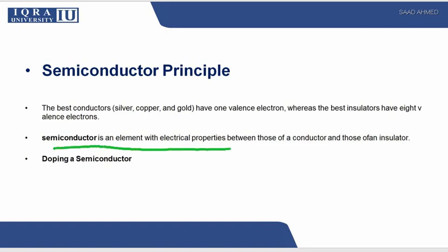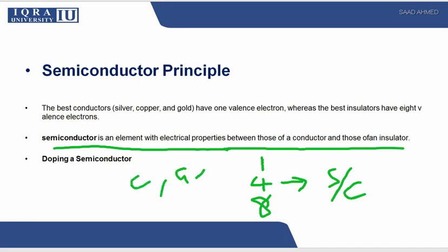A semiconductor is an element with electrical properties between those of a conductor and of an insulator. So we have one electron in the valence orbit of conductor, eight electrons in the valence orbit of insulator. So semiconductors have four valence electrons like carbon, germanium, silicon. These are the elements which have four valence electrons and they belong to the fourth group of the periodic table.